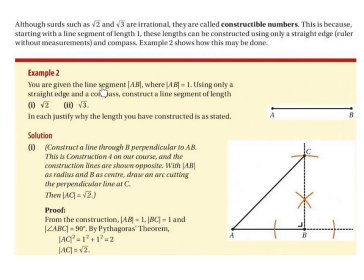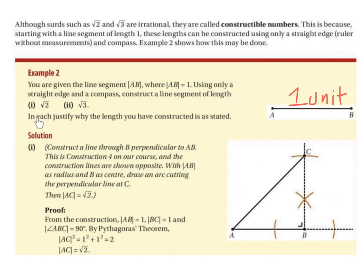You are given the line segment AB, where the length of AB — the distance from A to B — is equal to 1 unit. Using only a straight edge and a compass, construct a line segment of length root 2 and root 3. In each case, justify, or explain, why the length you have constructed is as stated.